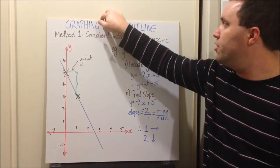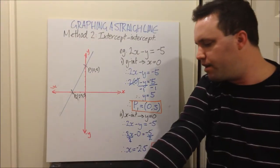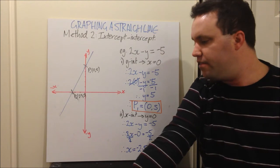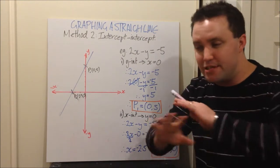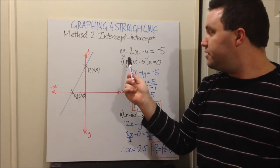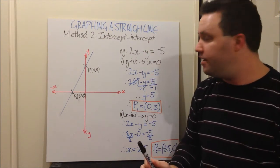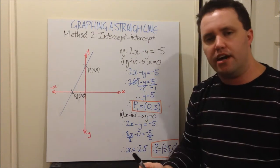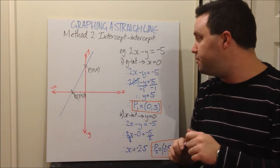Now method number 2, which I actually think, if your algebra is good and you're fairly good at rearranging equations, this is probably the easier of the two by far. Seriously, by far this is way easier. Let's take another linear equation, 2x minus y equals negative 5. It might look a bit scary to start off with, but trust me, this is an easy way.